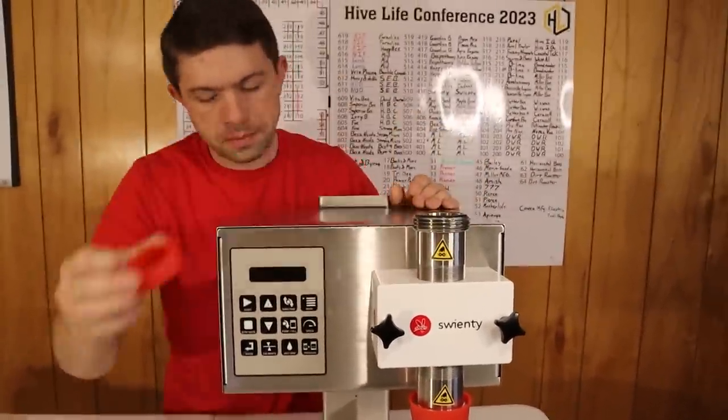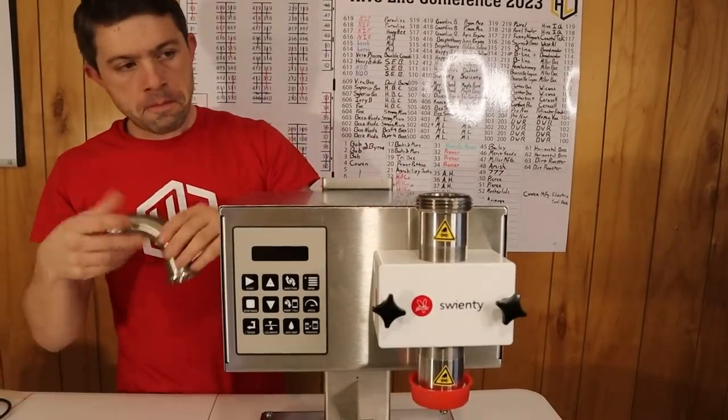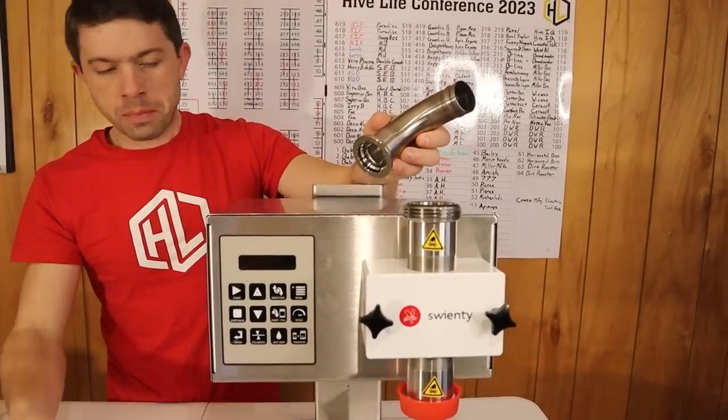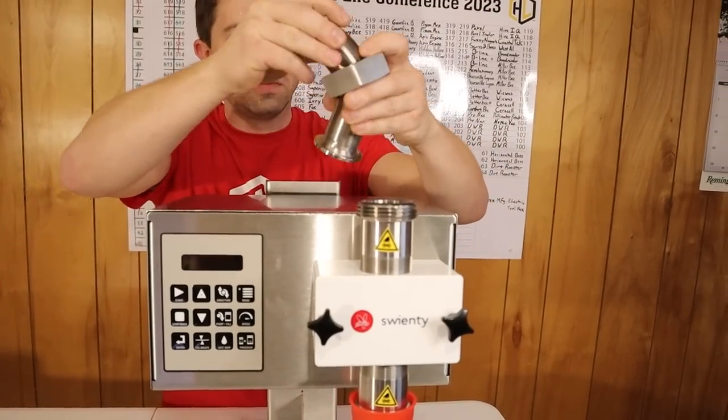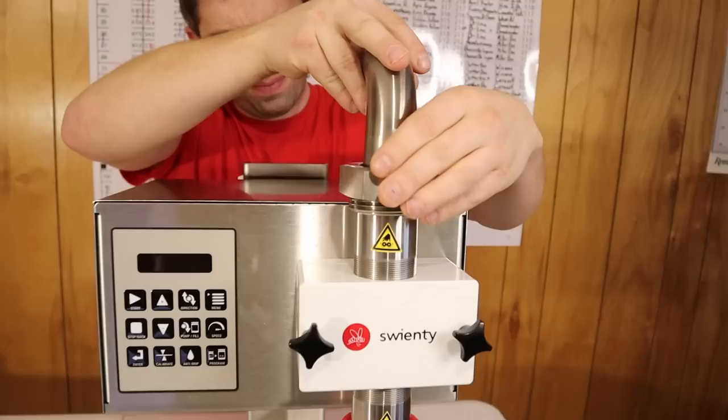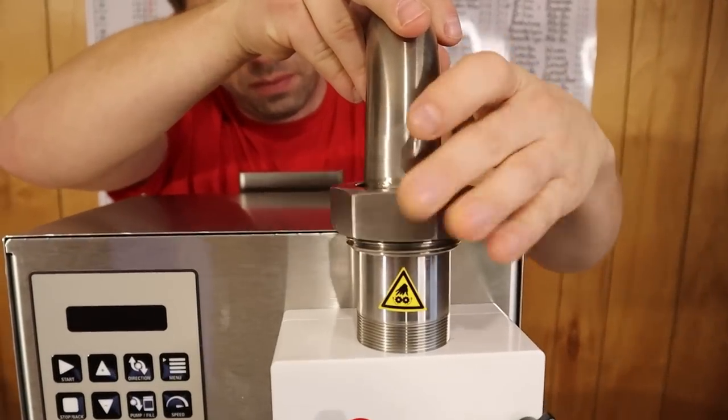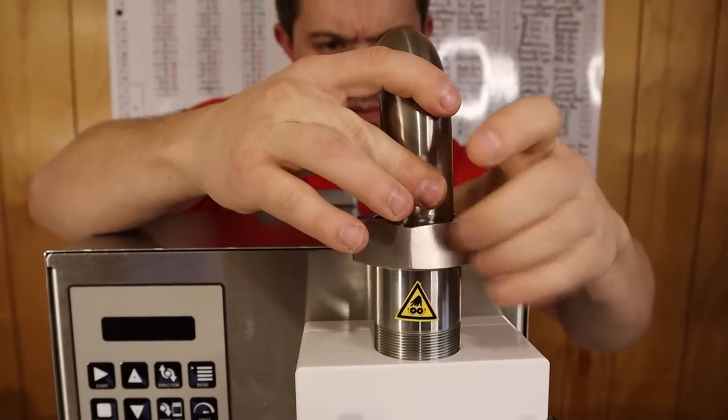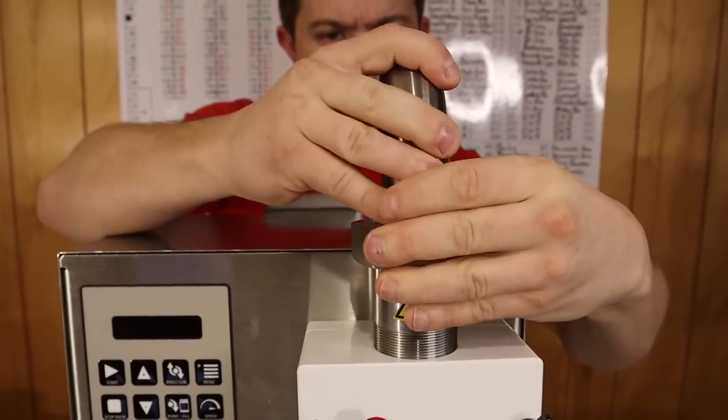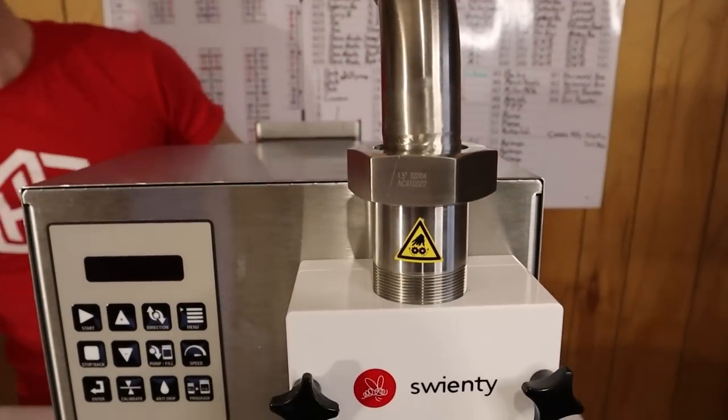Now we're going to take the top part off right now and throw the stainless steel elbow and this nut that holds it in place. Again, very strong. That nut is extremely heavy. I love it. Everything can just be hand tightened.